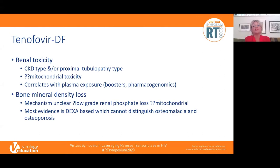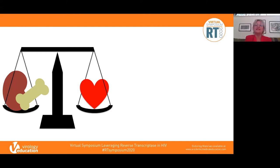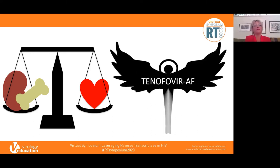There are also pharmacogenomic associations with TDF renal toxicity. Bone mineral density loss is the other classic adverse event; the mechanism is unclear — possibly mitochondrial or related to low-grade renal phosphate loss. Importantly, most evidence for TDF and bone loss is based on DEXA, which cannot distinguish osteomalacia from osteoporosis. This created a conundrum for years: renal and bone concerns for TDF versus cardiovascular concerns for abacavir.